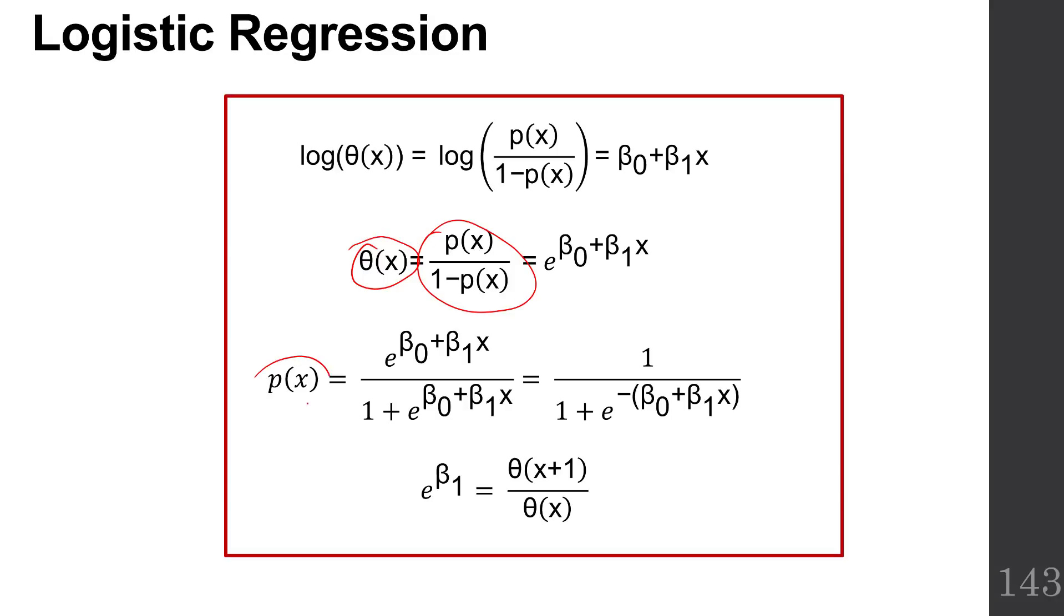The third one says I can take it one step further, and instead of talking about it in terms of the odds, I can talk about it in terms of the probability of success. And that's the formula that we derived, e to the beta naught plus beta 1x over 1 plus e to the beta naught plus beta 1x.